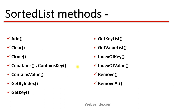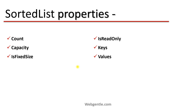These are a few methods in the sorted list which are available to perform operations. We can add, clear, clone, contains, contains value, get by index, get key — all the methods available in the sorted list are listed here. We will learn all these methods one by one in this video. Also, there are few properties which are also available in the sorted list.